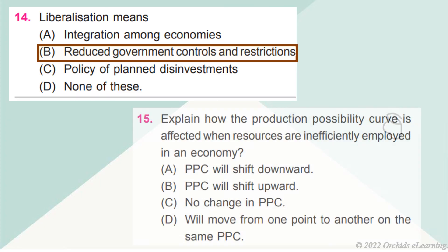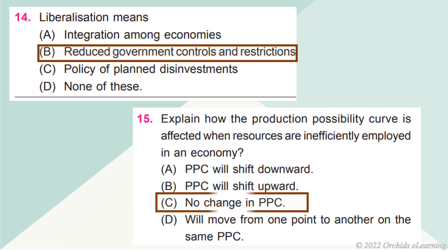Explain how the production possibility curve is affected when resources are inefficiently employed in an economy. Answer c: No change in PPC.